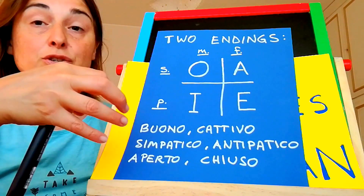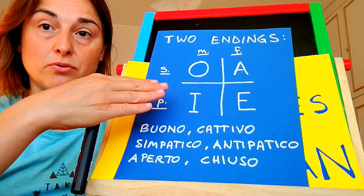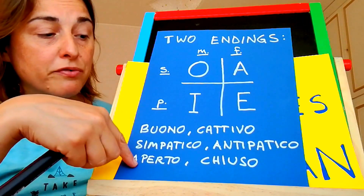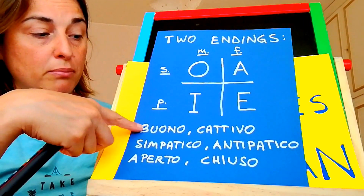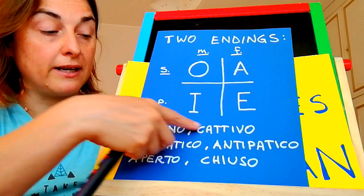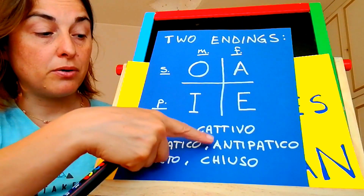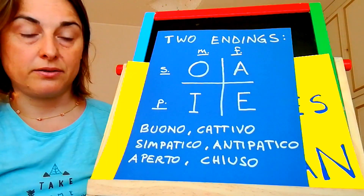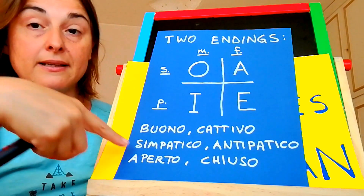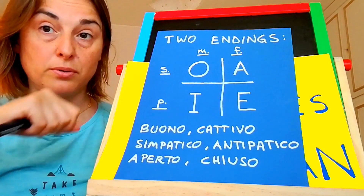There are adjectives that follow this rule, and here you find some examples. For example, buono and cattivo — good and bad. Simpatico and antipatico — nice and not nice. And aperto and chiuso — open and closed.